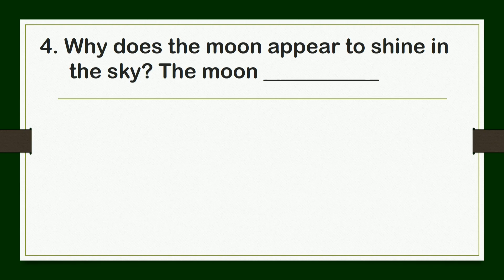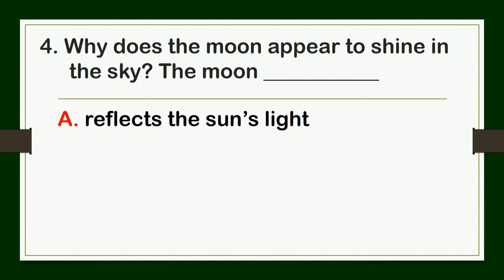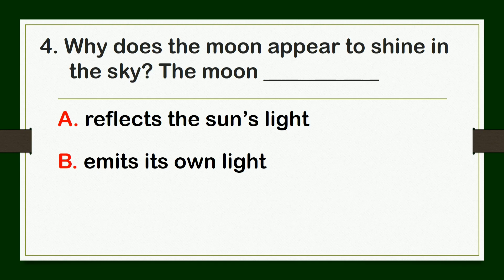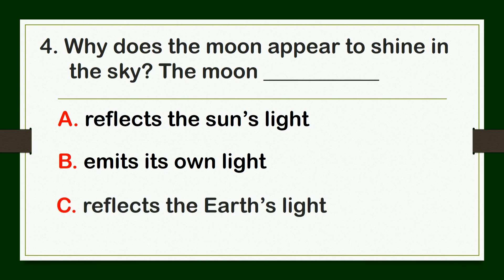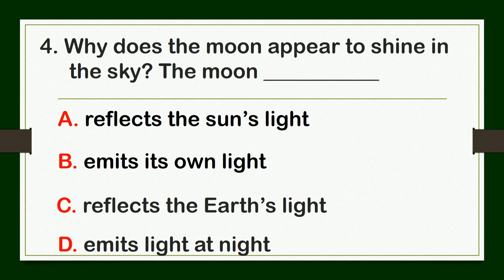Why does the moon appear to shine in the sky? The moon — A. reflects the sun's light, B. emits its own light, C. reflects the Earth's light, or D. emits its own heat. The correct answer is letter A: reflects the sun's light.